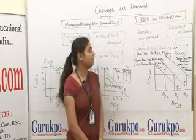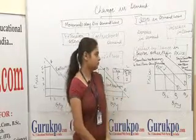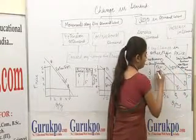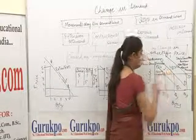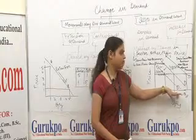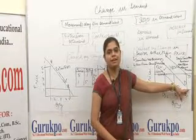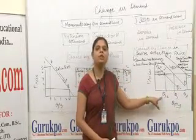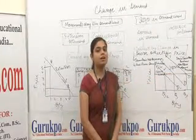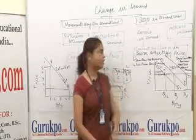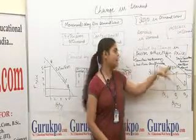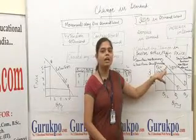We can also understand this concept through the diagram, where our curve shifts upward or downward. When quantity increases due to change in other factors, the curve shifts rightward, which represents an increase in demand. When quantity decreases due to change in other factors, our original curve shifts downward, which is known as a decrease in demand. Here the original curve is DD. Upward shifting means increase in demand and it shifts to the right; downward shifting is known as decrease in demand and shifts downward.